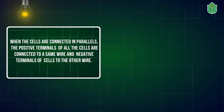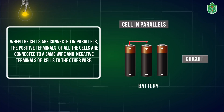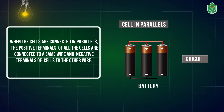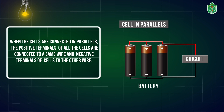The other method of connecting the cells is to connect them in parallels. When connecting the cells in parallels, we are connecting the positive terminals of all cells at a single point and the negative terminals of all the cells at a single point. This way we connect the cells in parallels, which becomes more efficient and good.